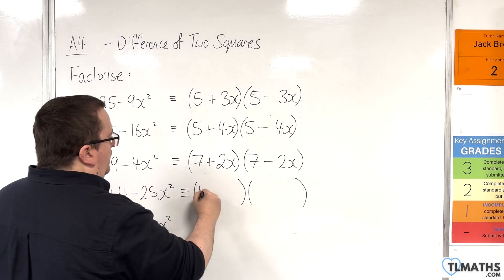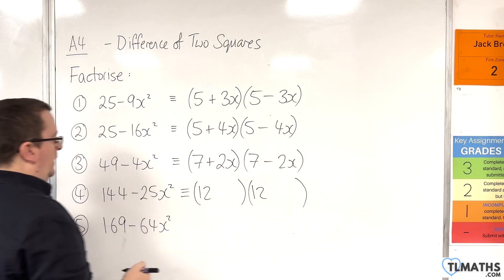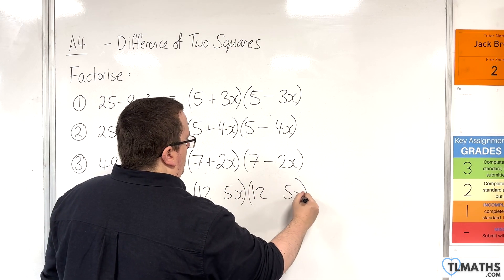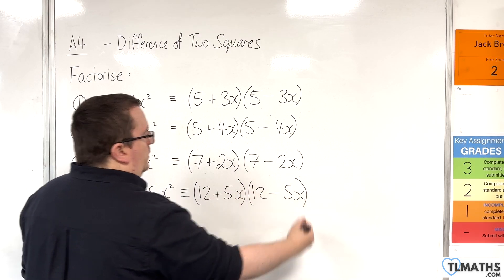The square root of 144 is 12. The square root of 25x squared is 5x. One's a plus, one's a minus.